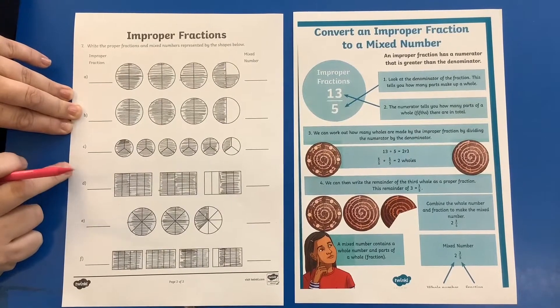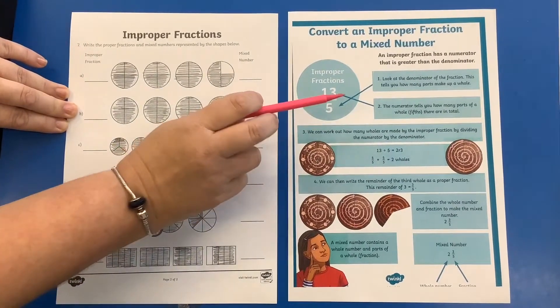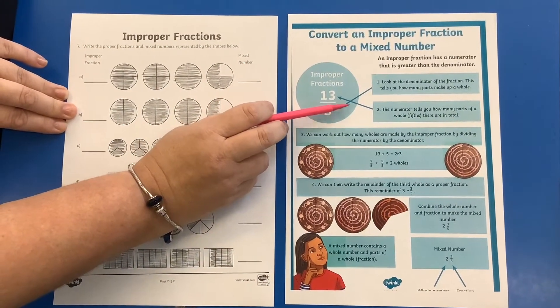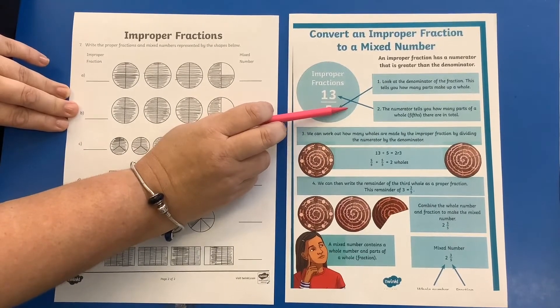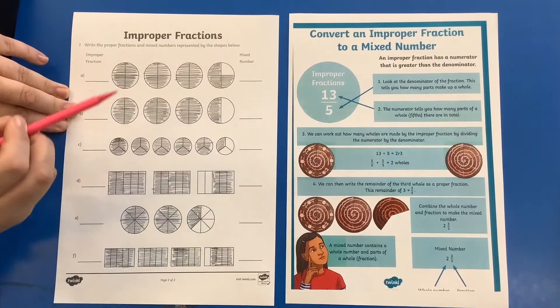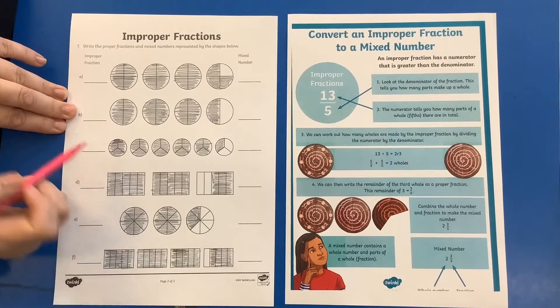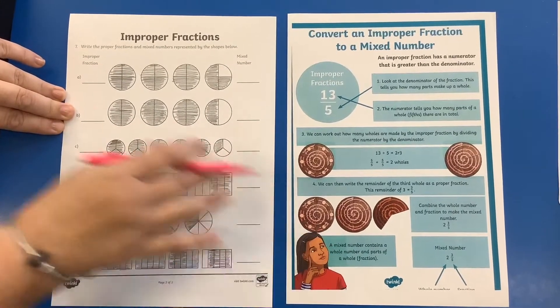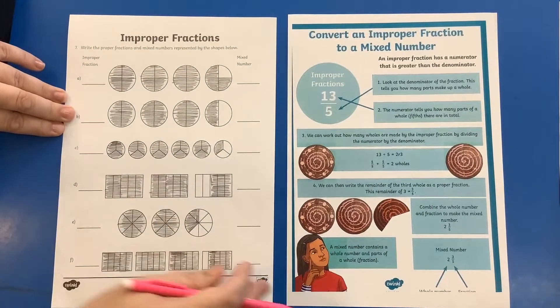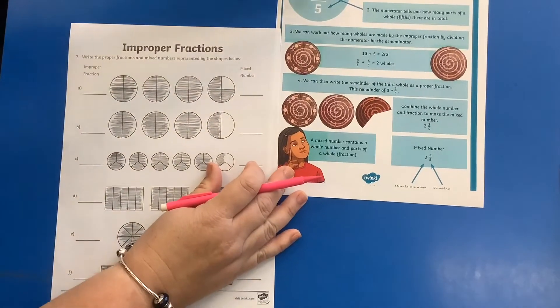So you've got this sheet, which is the worksheet, and then I've also put in this sheet, which is an explanation of what you need to do. So have a go with listening to me, and we'll do the first one together, but then as I say you've got this sheet here, so this will help you. So let's have a look at this first question.